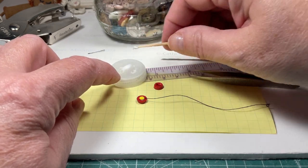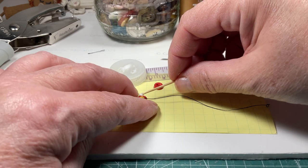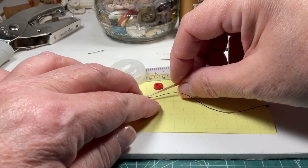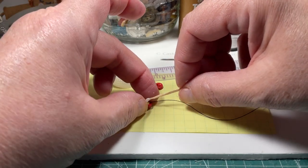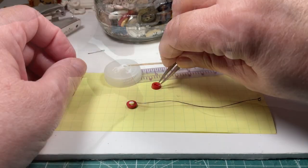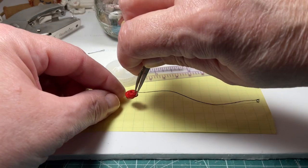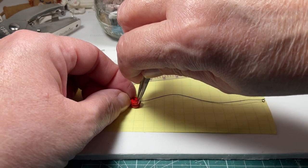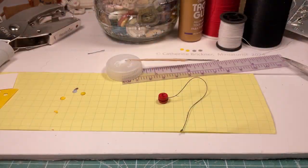Now add glue to the top of the eighth inch circle and just keep it on that circle. Then place the other button on top, gently pressing and making sure that they're centered on top of each other. Let dry.